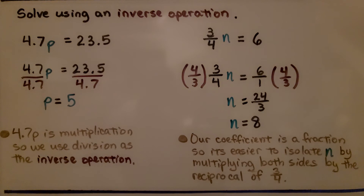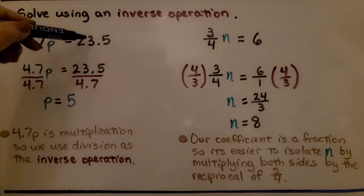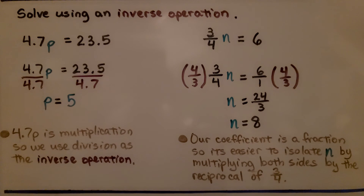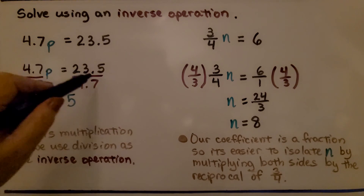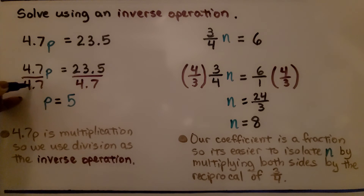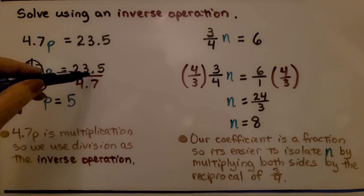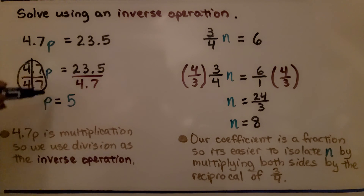Now, solving 4 and 7 tenths times p equals 23 and 5 tenths using an inverse operation: since 4.7p is multiplication, we divide both sides by 4 and 7 tenths. The left side simplifies to 1p, and the right side equals 5. So p equals 5.